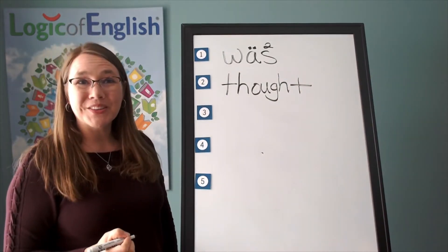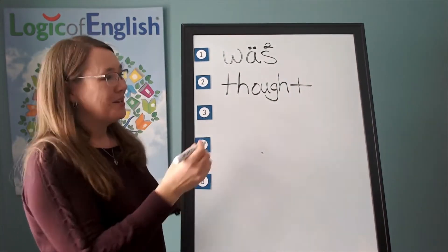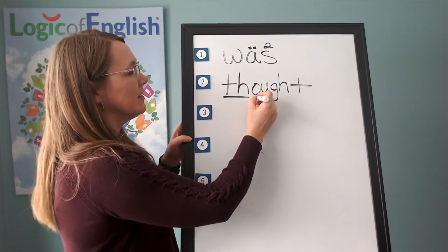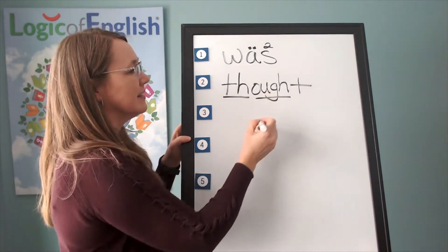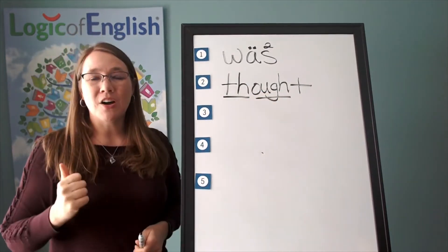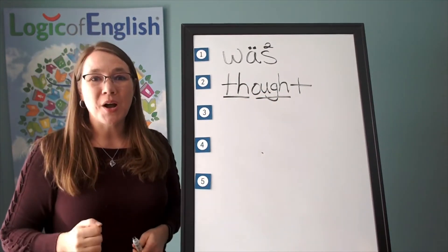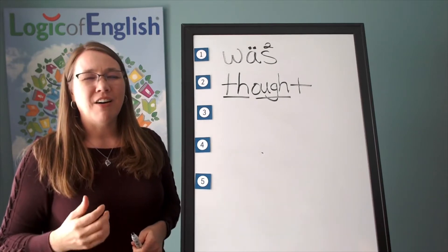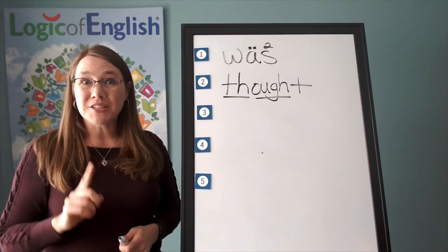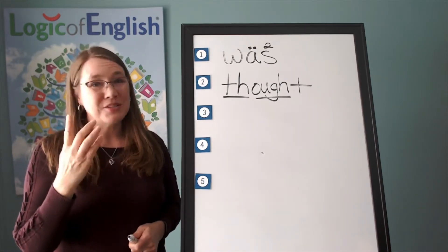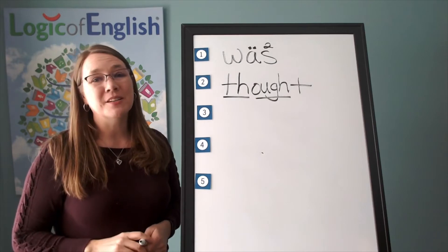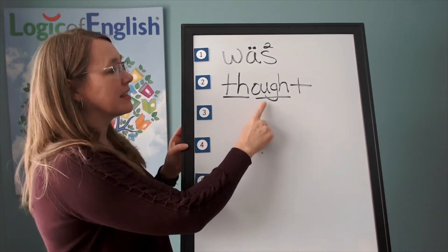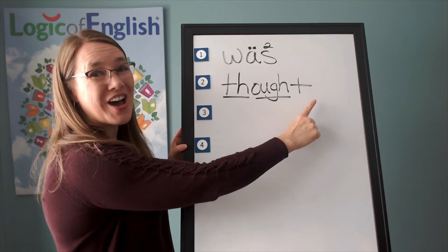How will we mark 'thought'? We'll underline the TH and the aw. And what sound of aw, oh, oo, ow, off, off is this? Thought — aw — thought. It's the first sound, so we don't need to put a number over it. Let's sound it out: th, aw, t — 'thought.'